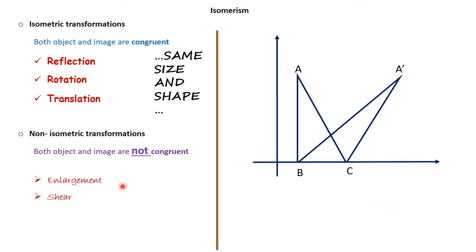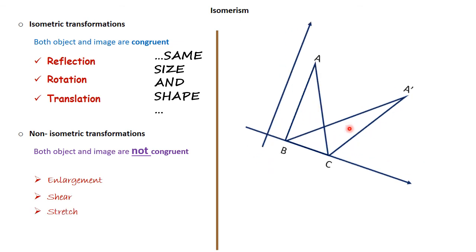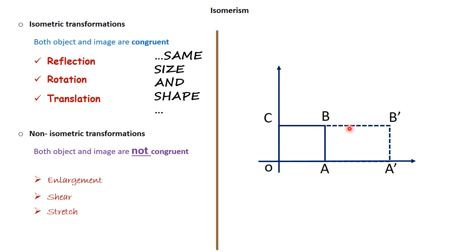The next non-isometric transformation is a shear. We have a triangle ABC transformed to A prime B prime C prime. The area of ABC is the same as A prime B prime C prime, but the shapes are different — so this is not an isometric transformation. Similarly, a stretch: a rectangle OABC transformed to O A prime B prime C prime — the shape has changed. Therefore this is also a non-isometric transformation.